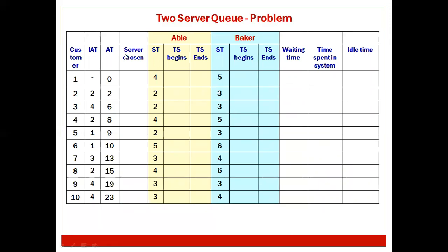The simulation table is almost similar to the single-server queue, except that here we have two persons — we write columns separately for Able and for Baker. The columns are: customer, IAT, arrival time (AT — cumulative IAT, so first AT is 0, then 2, 4, 6, 8, and so on), and service time for both persons. Complete this structure first before filling in row by row.